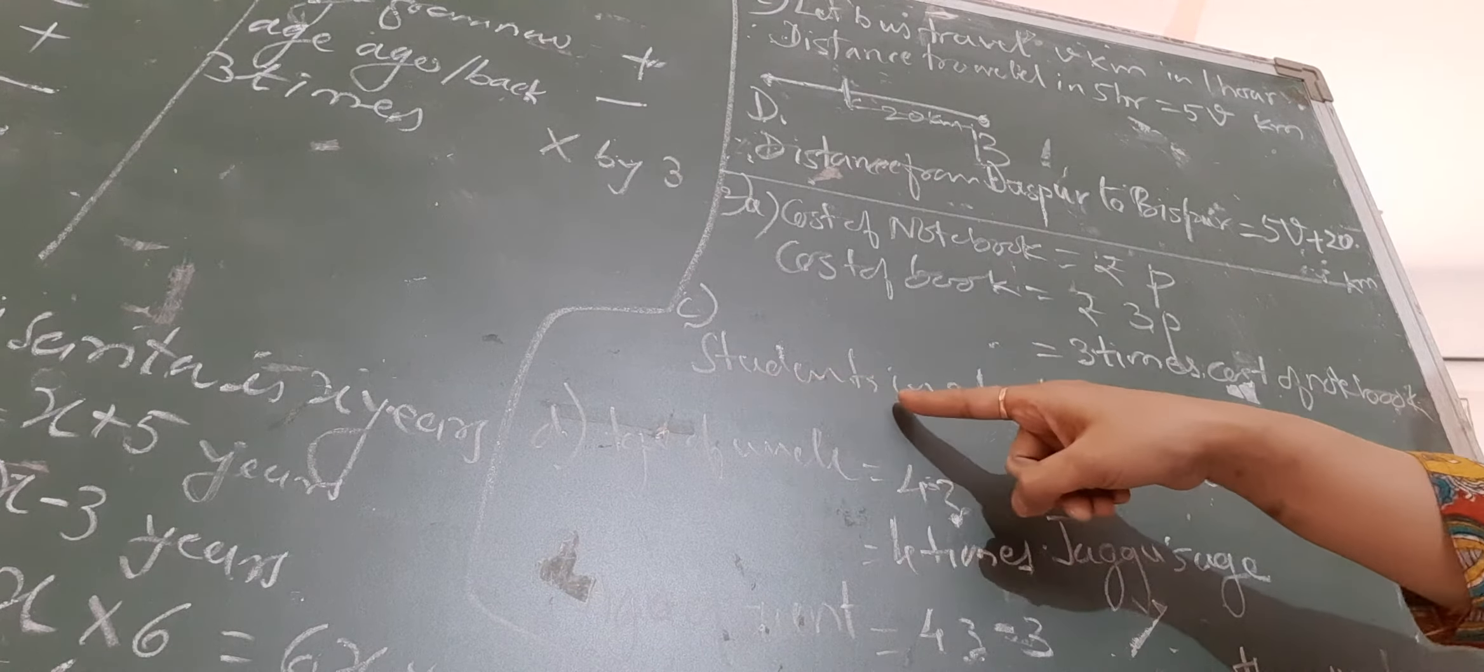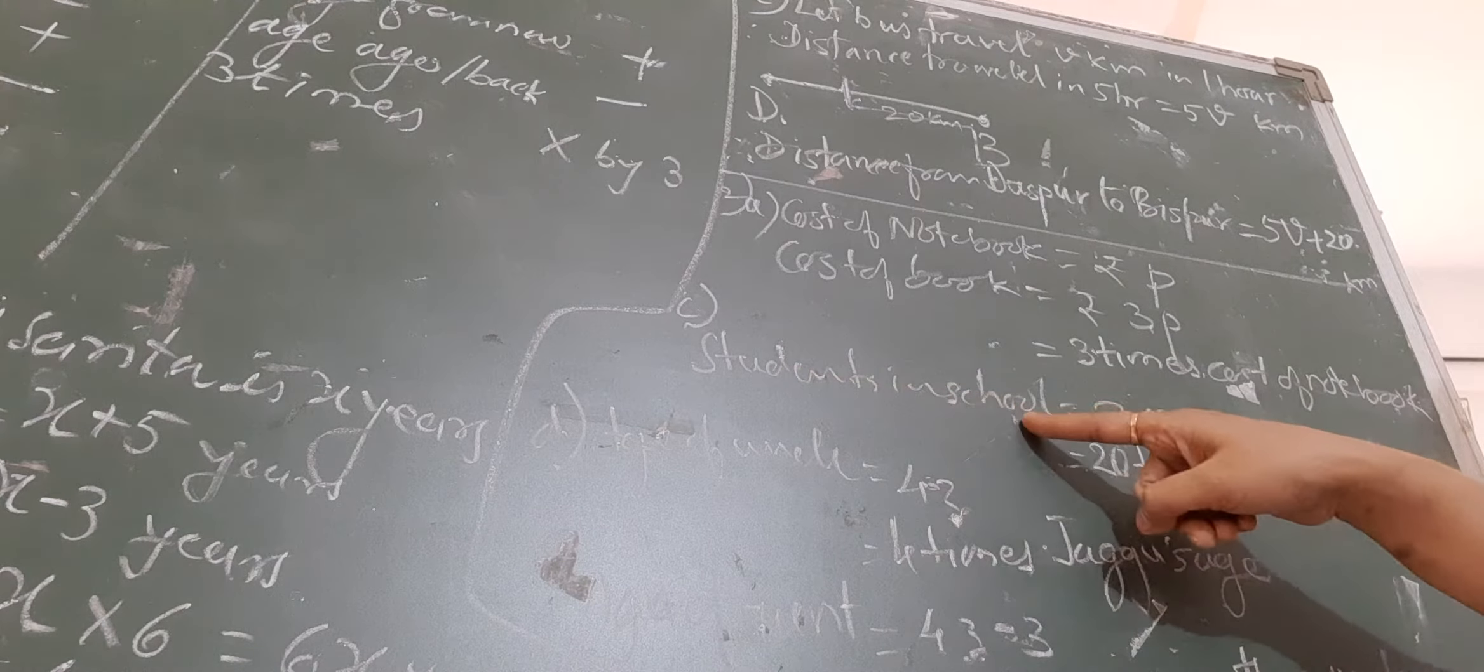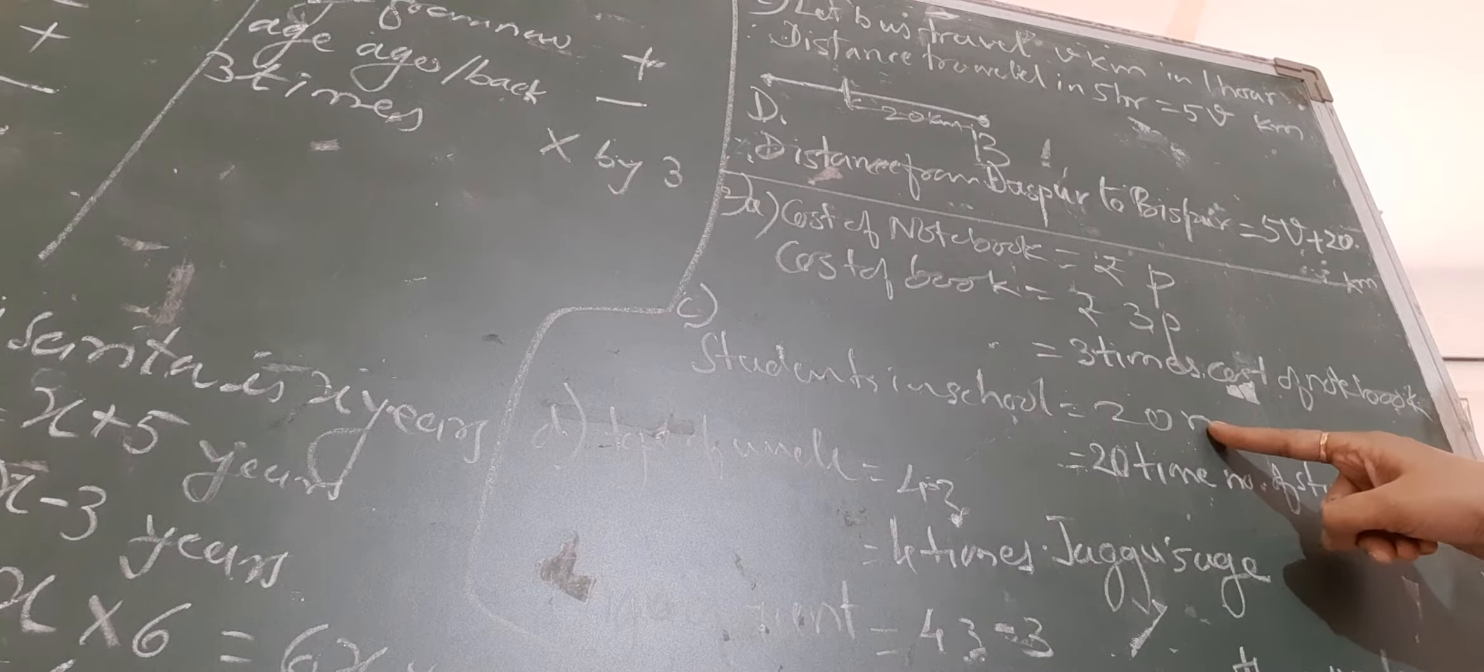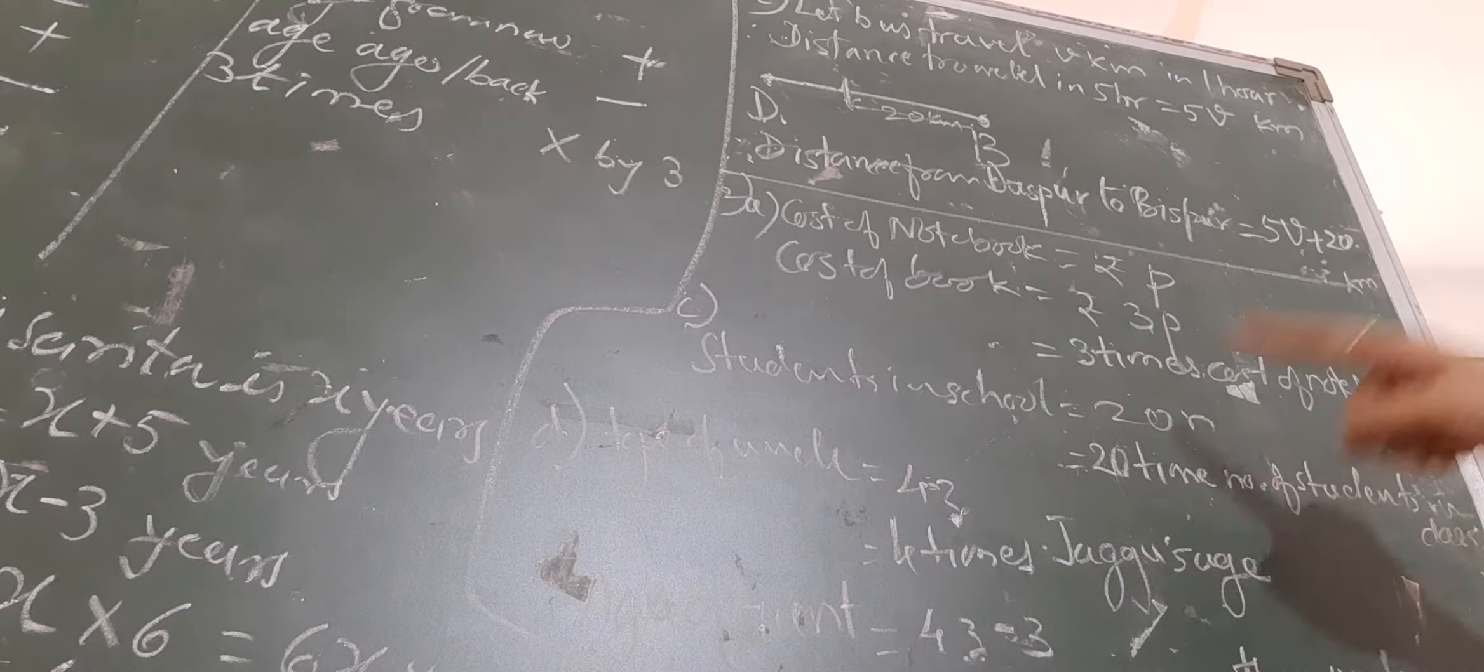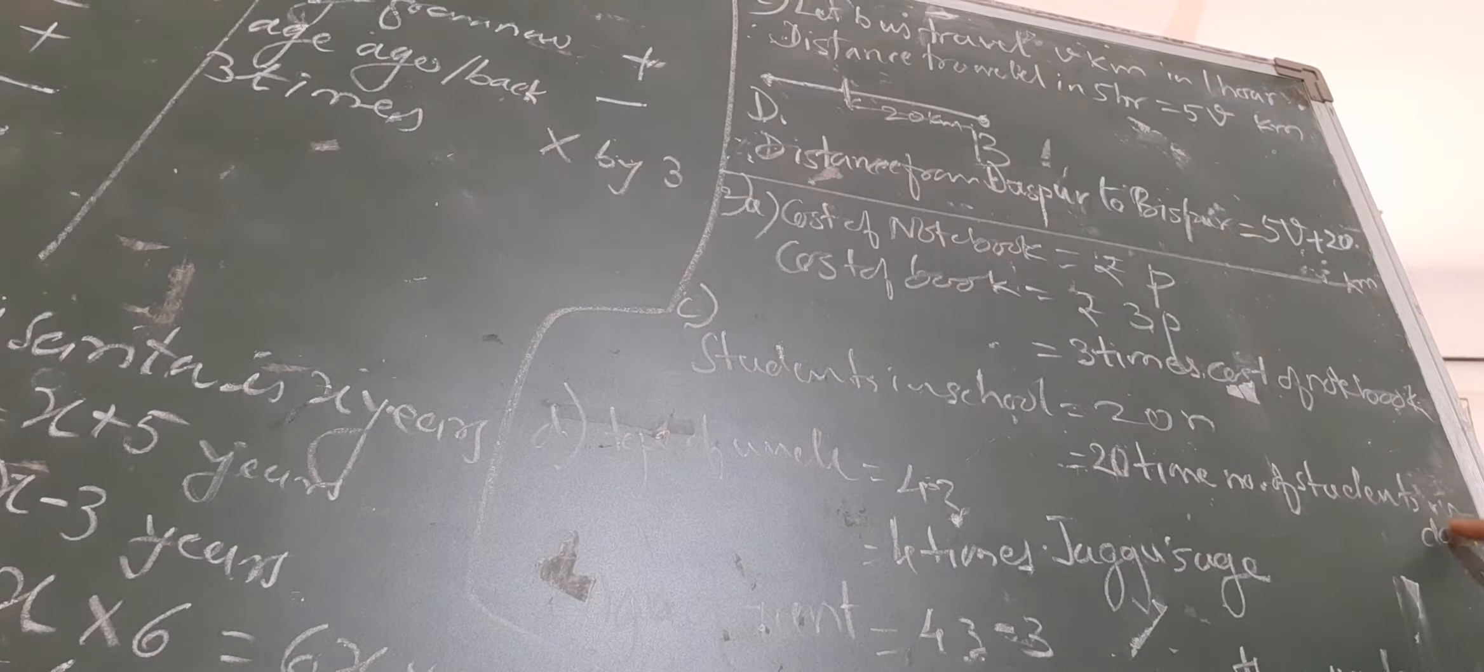In part C, it is given that there are N number of students in class. Number of students in school is 20N. 20N means 20 times N. And what is N? N is the number of students in a class. So we can write down that students in school is equal to 20 times the number of students in class.